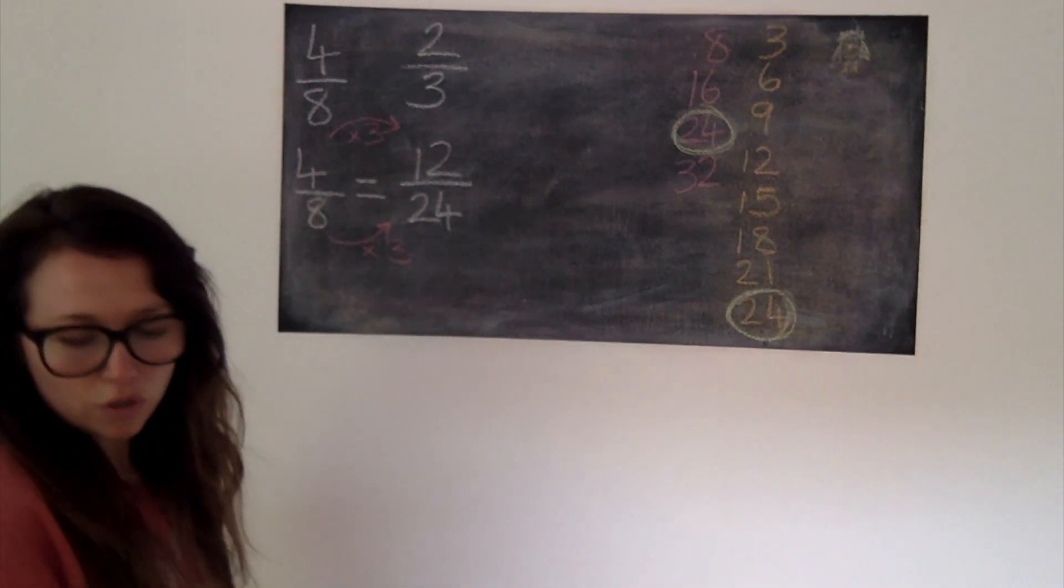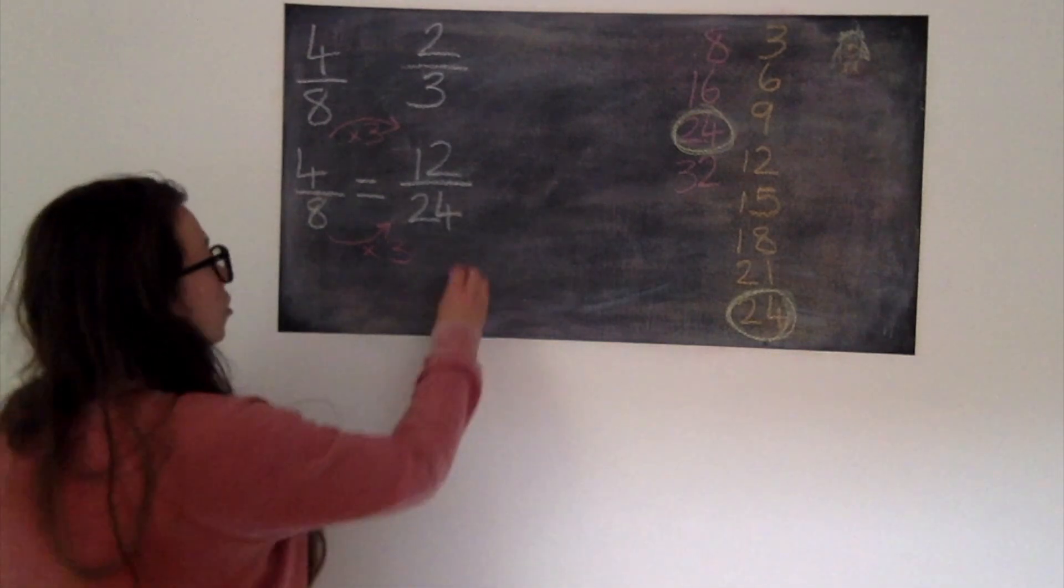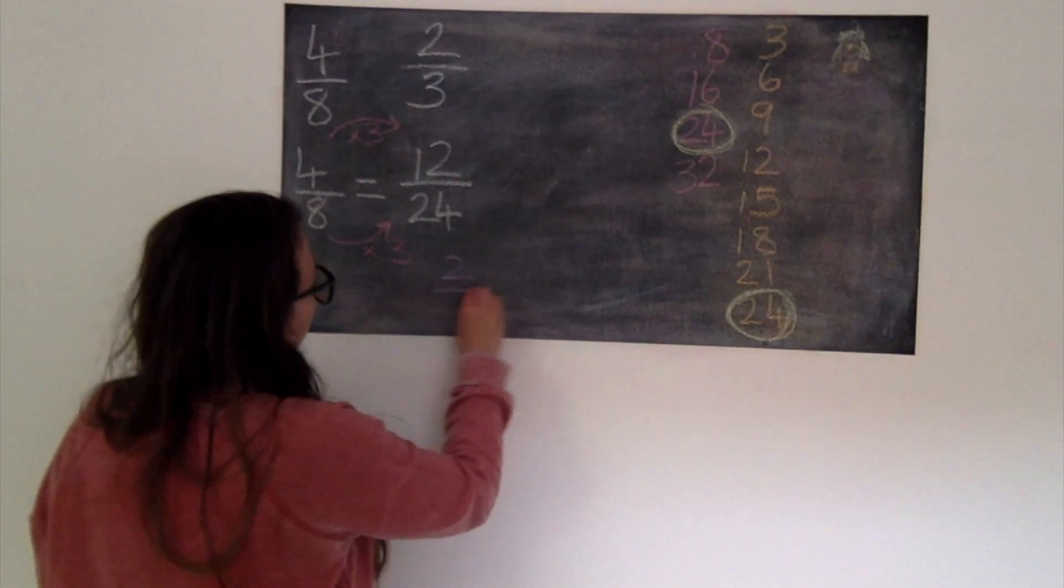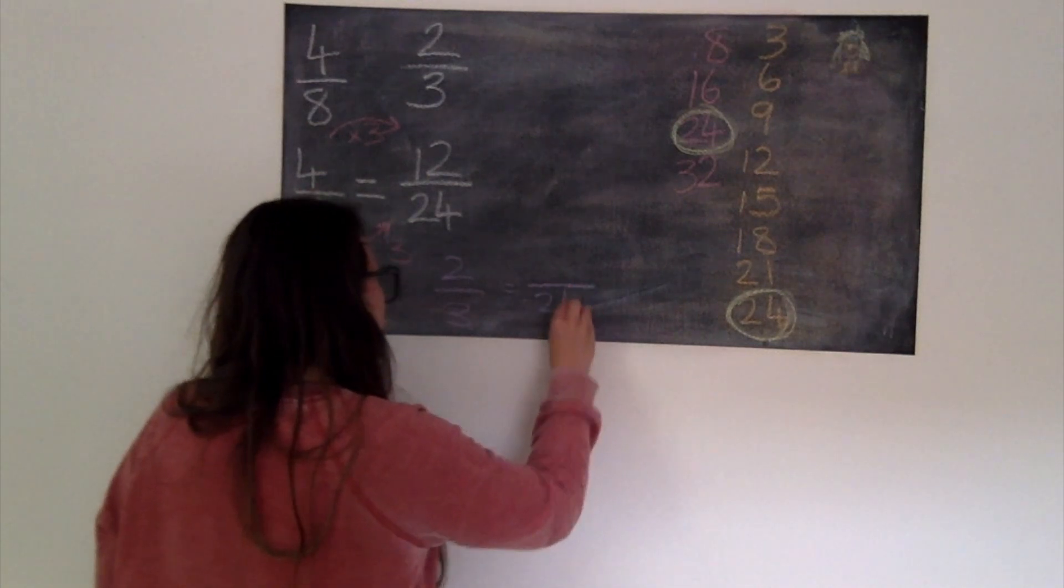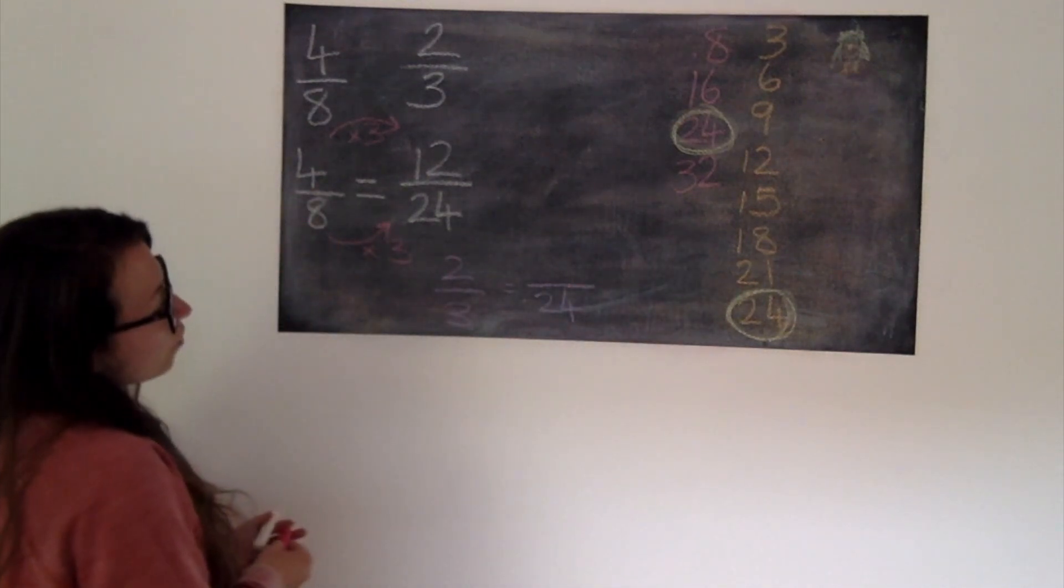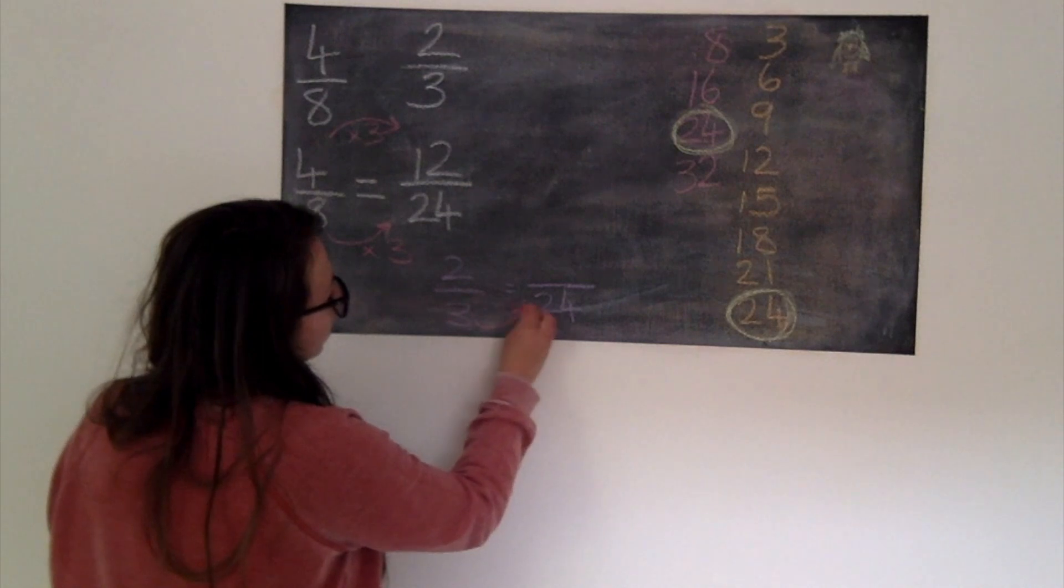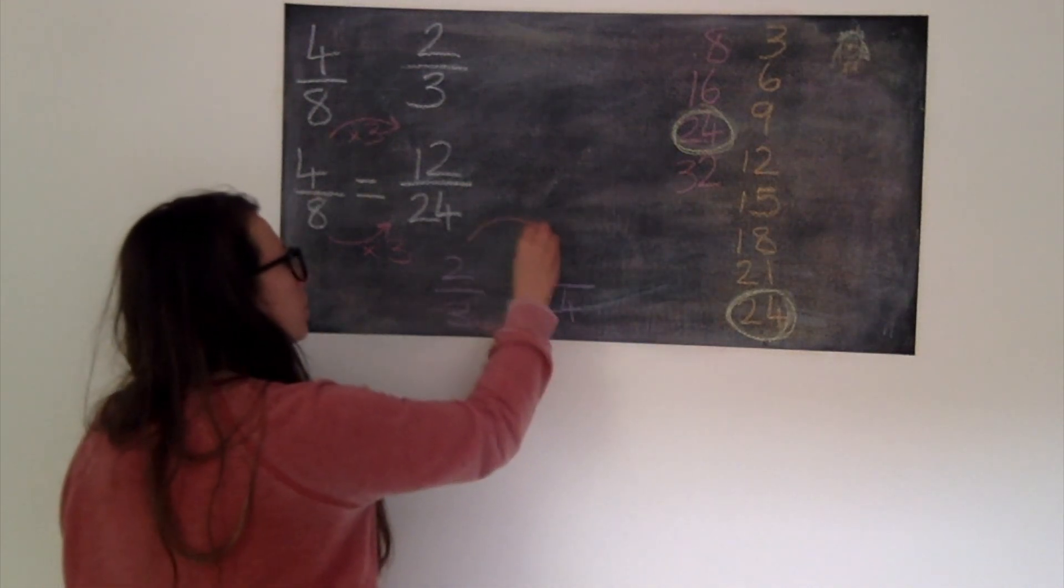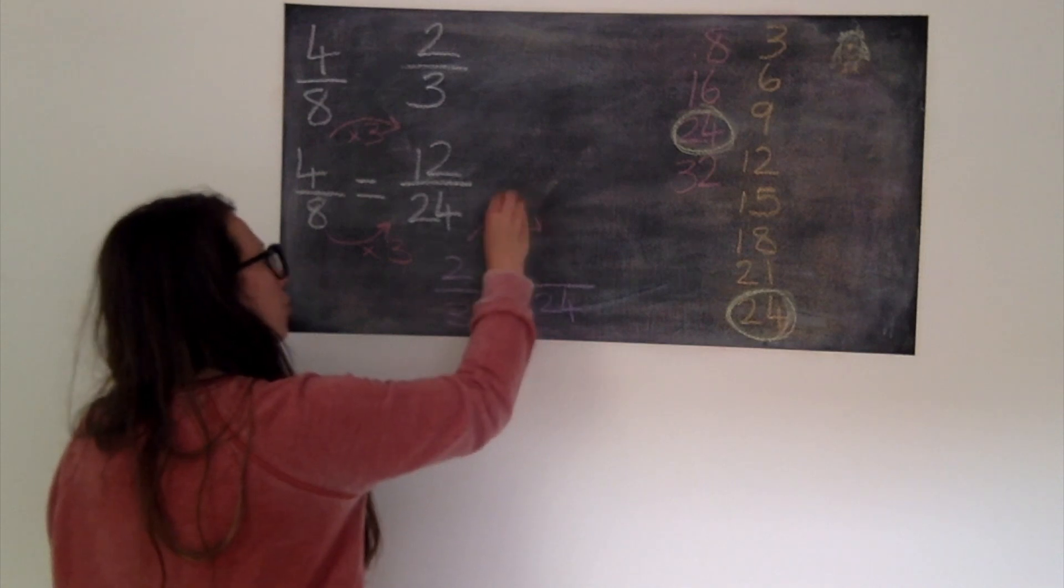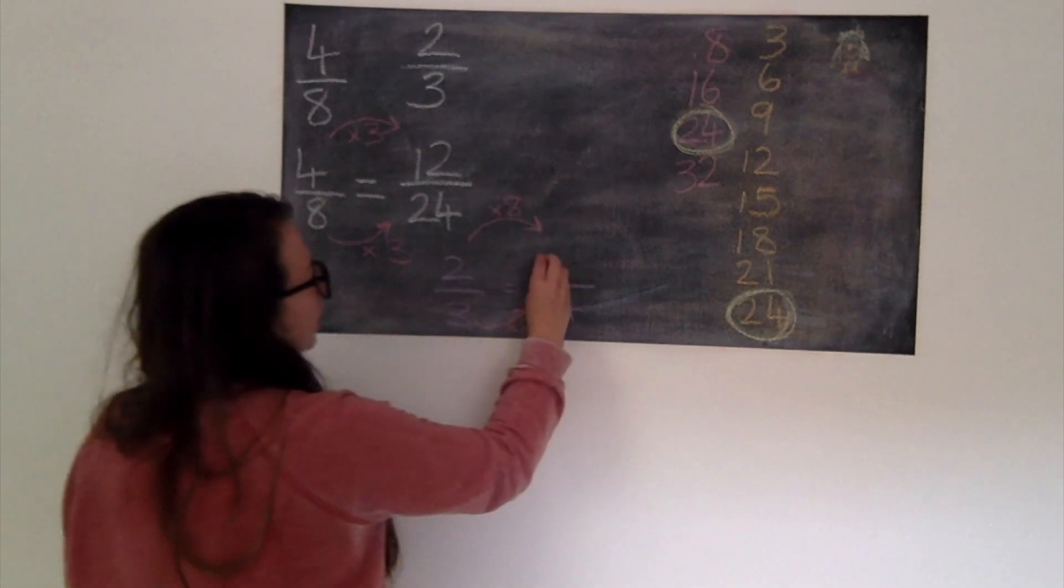We're now going to do the same for 2/3rds. So we're going to turn 2/3rds into 24ths. Using our times tables, what are we times 3 by to get to 24? We've timesed it by 8. So again we must times by the same thing for our numerator. 2 times by 8 gives me 16.